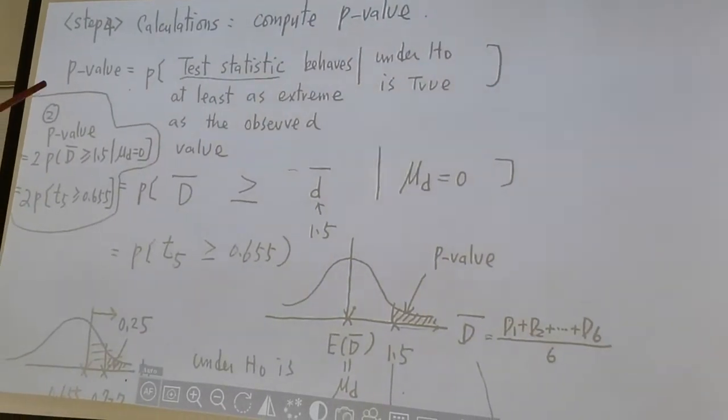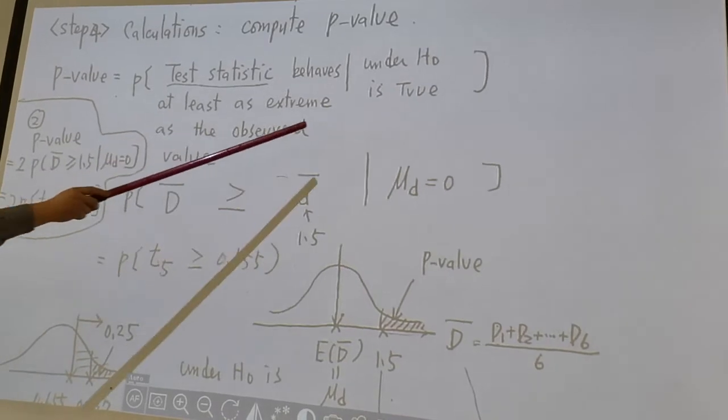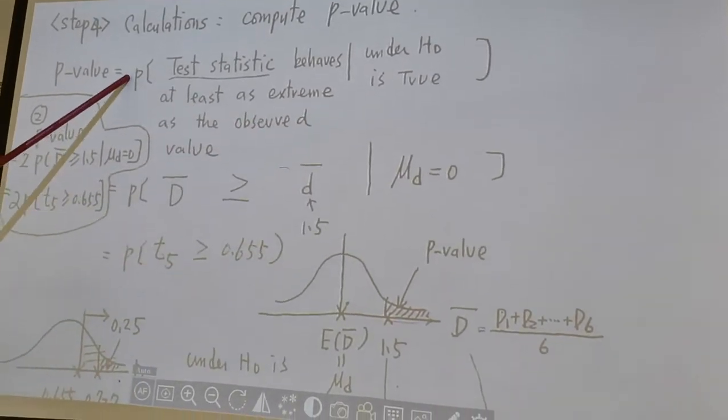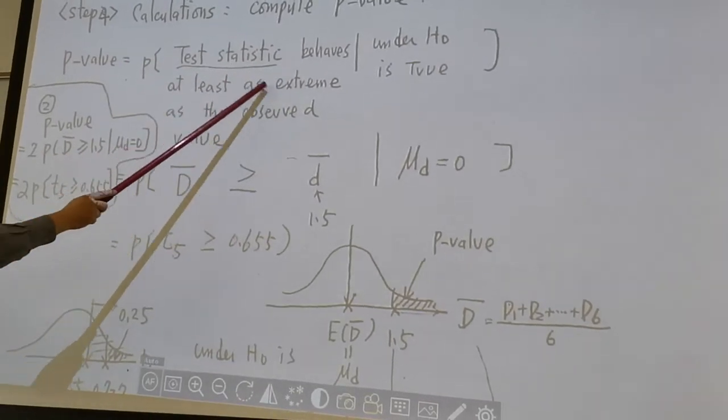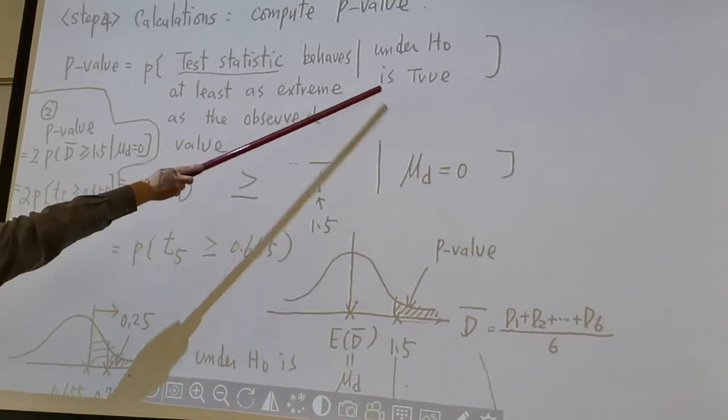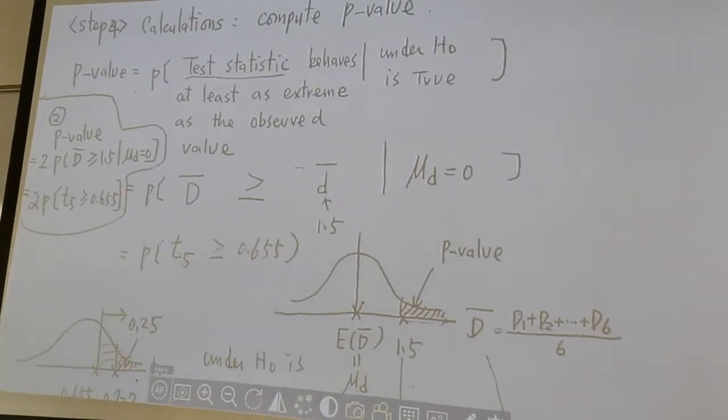Let's review the concept of p-value again. P-value is defined to be under the assumption that H₀ is true, how likely test statistic behaves at least as extreme as an observed value. So under H₀ is true, we assume μd is 0, the summer session is useless.